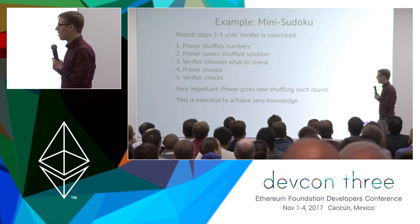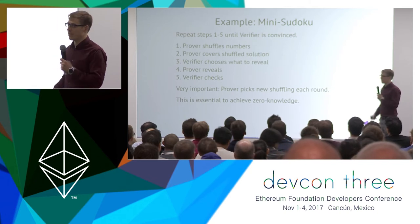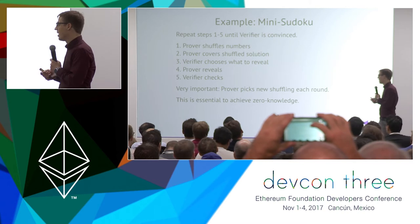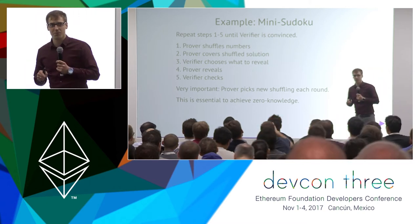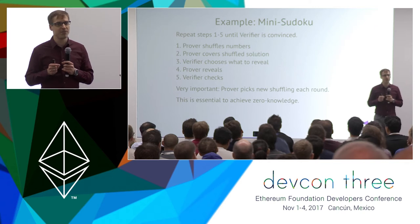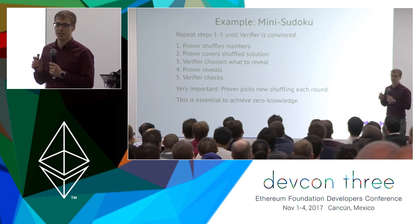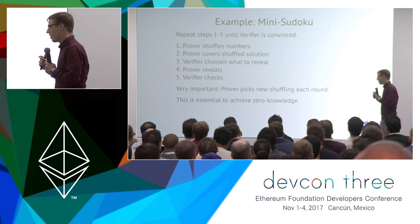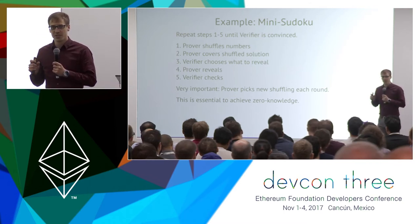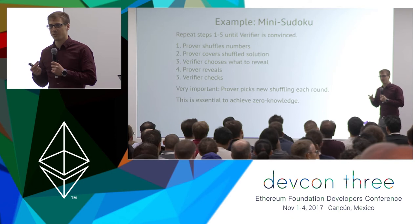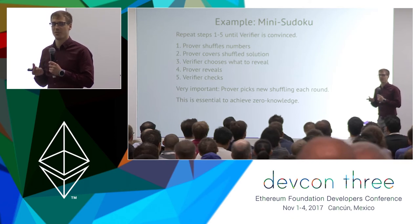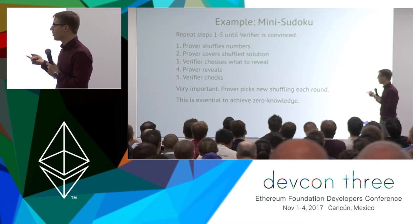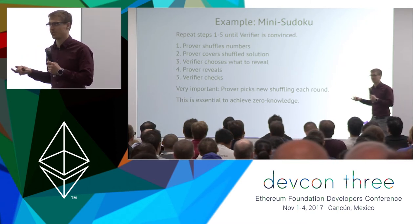Steps one through five are repeated multiple times. The very important thing is that the prover must always choose a completely random shuffling in each round. If the prover uses the same shuffling and the verifier knows this fact, then information can be revealed. Only by choosing a new shuffling in each round do you achieve zero knowledge.